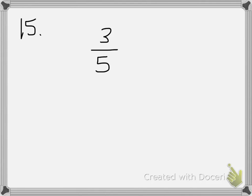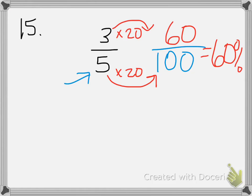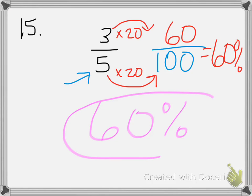For number 15, 'write each fraction as a percent.' The denominator here is 5, which is compatible with 100. So just set it equal to something over 100. To get from 5 to 100, multiply by 20. Do the same on top: 3 times 20 is 60. So it's 60/100, and since percent literally means per 100, your answer is simply 60%. No extra conversion needed.